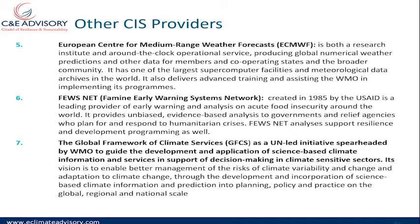The Famine Early Warning System Network — FEWS NET — was created in 1985 by the United States Agency for International Development. It is a leading provider of early warning and analysis on acute food insecurity around the world, providing unbiased evidence-based analysis to governments and relief agencies who plan for and respond to humanitarian crises, and also supporting resilience and development programming. The Global Framework for Climate Services — GFCS — is a UN-led initiative spearheaded by WMO to guide the development and application of science-based climate information and services in support of decision-making in climate-sensitive sectors.